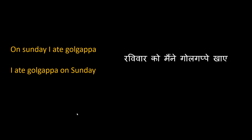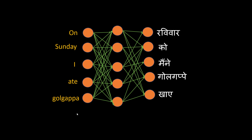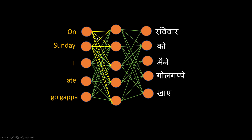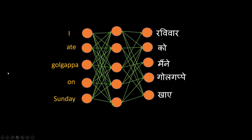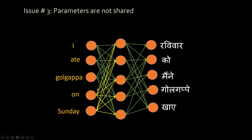Each word when converted to a vector requires a huge number of neurons in the input layer alone. The third issue is parameter sharing. Sometimes when you translate a language, two different English statements might map to a single Hindi statement. For example, 'on Sunday I ate gol kappa' — if the network trains on this, it adjusts the weights highlighted in yellow for 'on Sunday.' But if I say the same thing differently — 'I ate gol kappa on Sunday' — the network has to learn a different set of edges, so parameters are not shared.